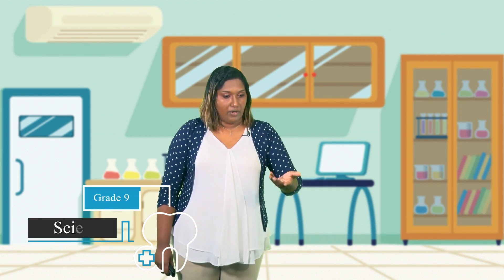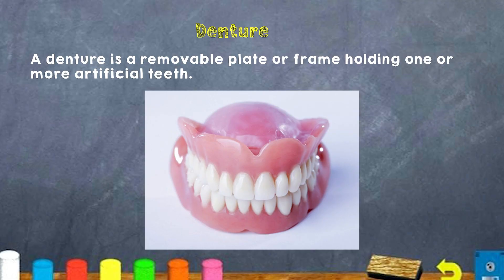The last one is called a denture. Most of our elderly folks — grandparents, uncles, aunts — may use dentures. A denture is a removable plate or frame holding one or more artificial teeth. Here you can see a picture of a denture or a set of dentures.